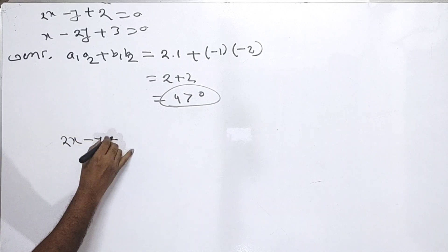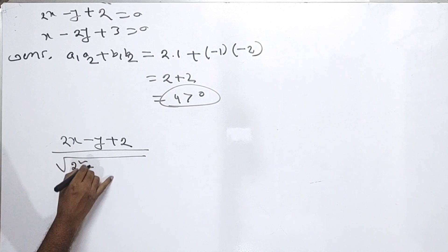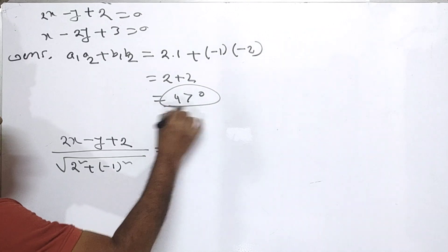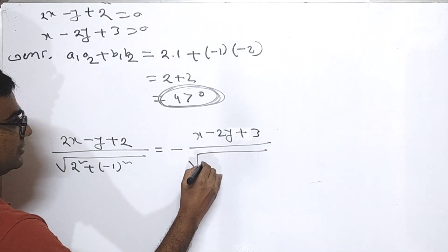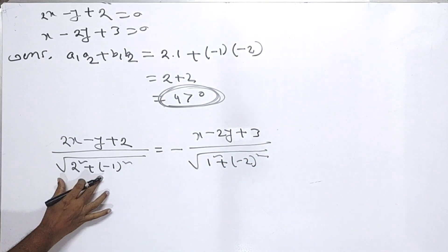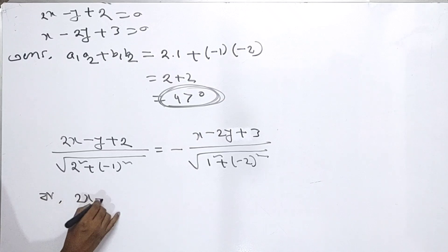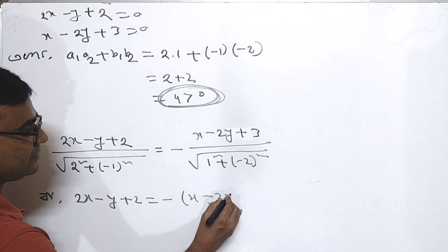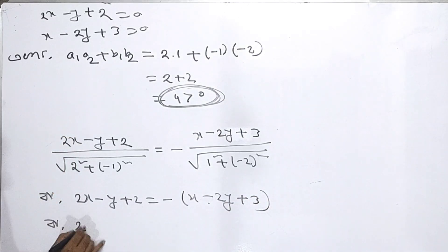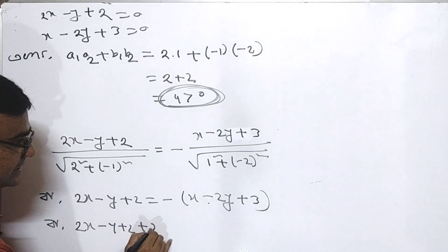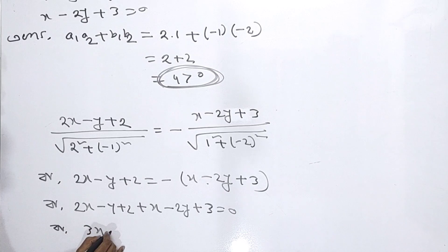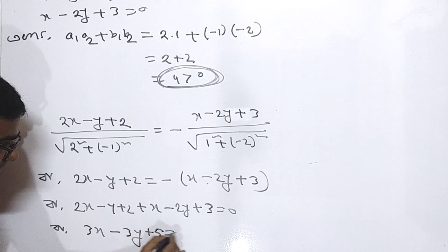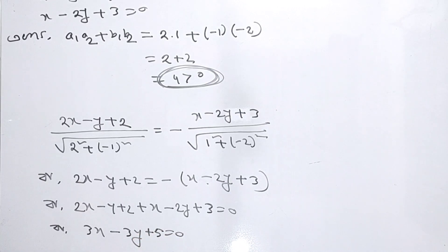We divide 2x minus y plus 2 by the square root of 2 squared plus 1 squared, which gives a positive result. Then x minus 2y plus 3 divided by root of 1 squared plus 2 squared gives the same result. So: 2x minus y plus 2 plus x minus 2y plus 3 equals 0, giving 3x minus 3y plus 5 equals 0. This is one angle bisector equation.